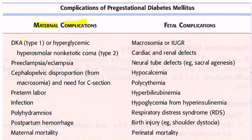With type 1 diabetes, there can be diabetic ketoacidosis. With type 2, there can be hyperglycemic hyperosmolar non-ketotic coma.